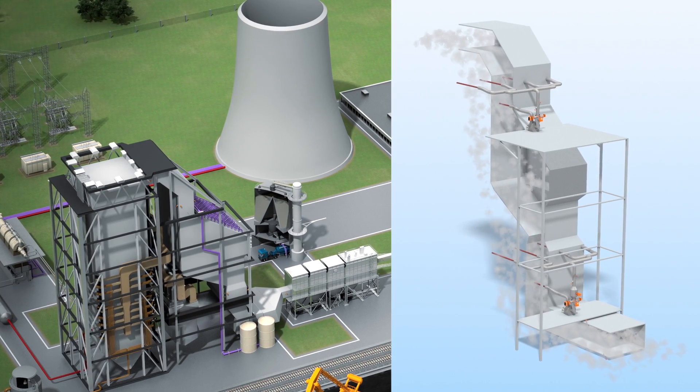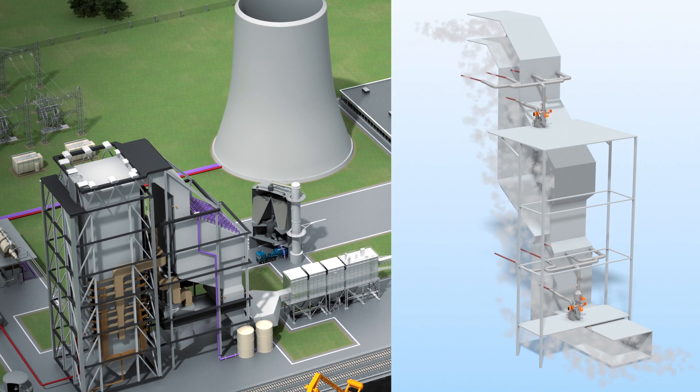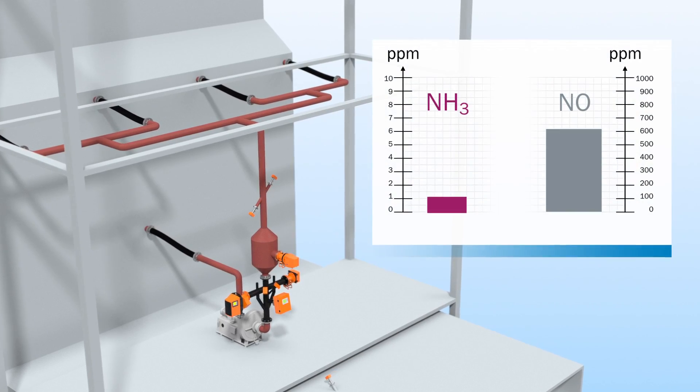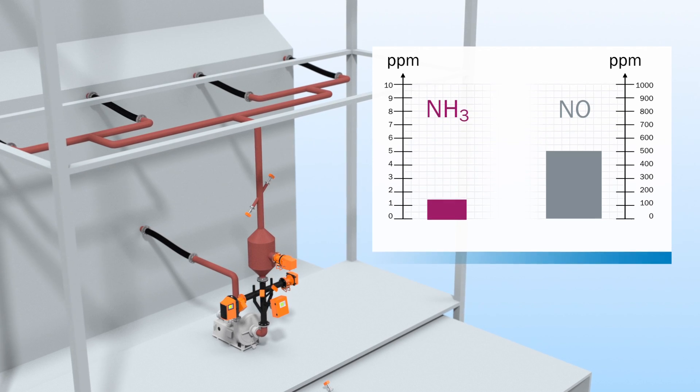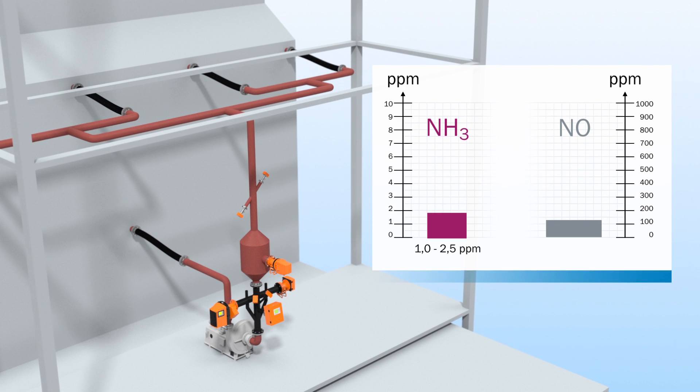The gas mixture is also measured after the SCR in order to check the effectiveness of the catalyst and provide feedback control. If any NOx is still present, ammonia injection is increased. If the ammonia level is too high, injection is reduced.